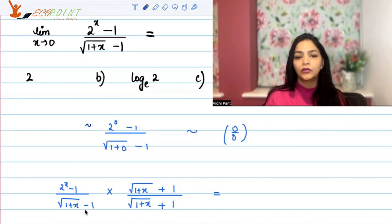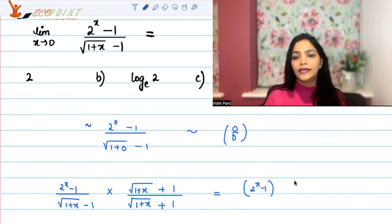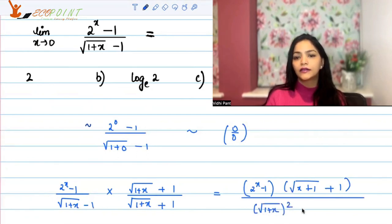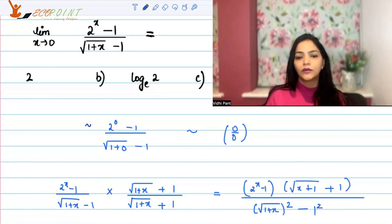By rationalizing, we are creating an a squared minus b squared form. In the numerator you will have (2 to the power x minus 1) multiplied by (square root of 1 plus x plus 1). In the denominator, a squared minus b squared gives (1 plus x) minus 1 squared, so the square root goes away and you get 1 plus x minus 1. The ones cancel, leaving just x.